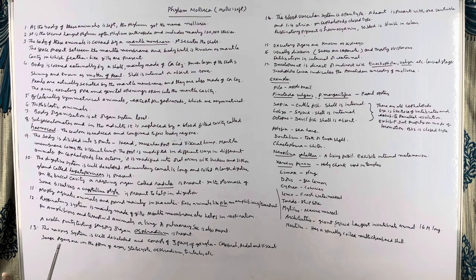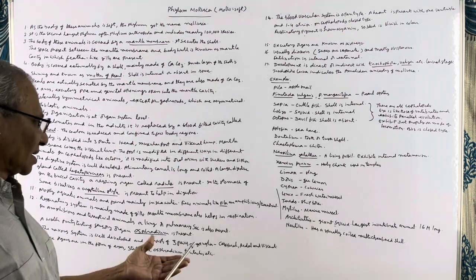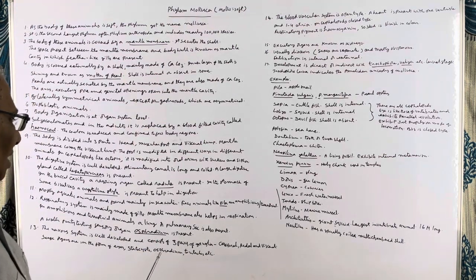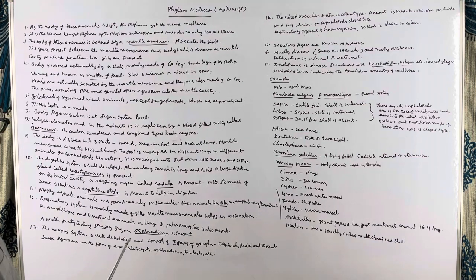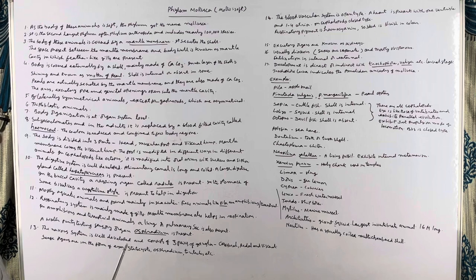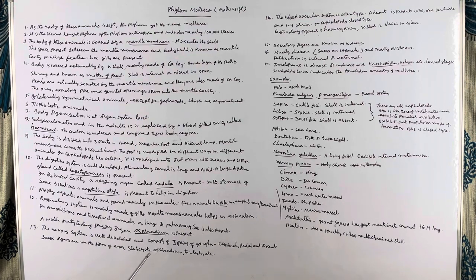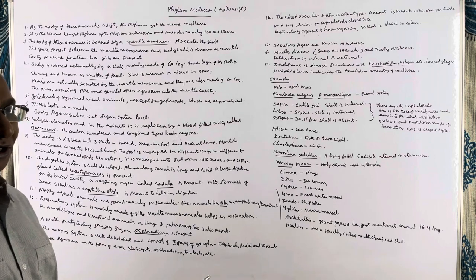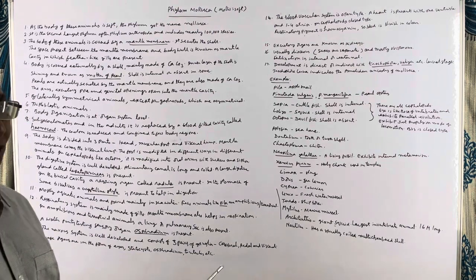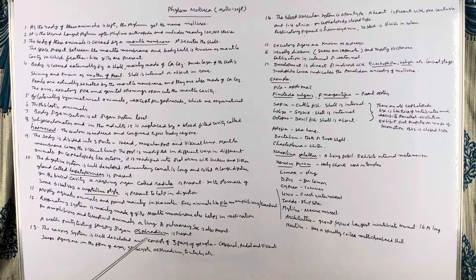Most mollusks are aquatic animals, except for a few like snails. They are found in large numbers in seawater. Some are also found in fresh water, very few are terrestrial, and some are amphibious. For example, Pila is an amphibian mollusk. In aquatic mollusks, a water-purity testing sensor organ known as the osphradium is present.